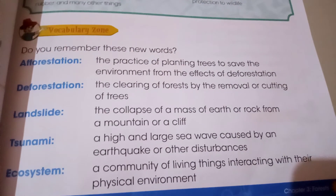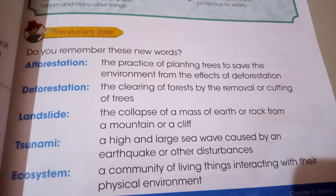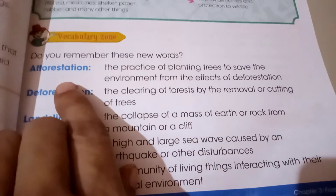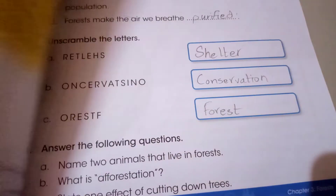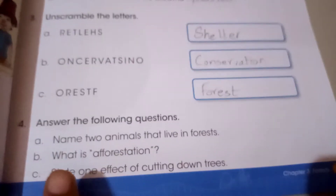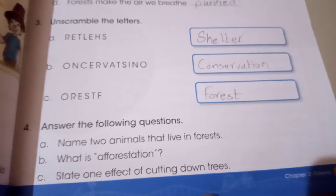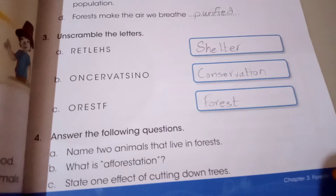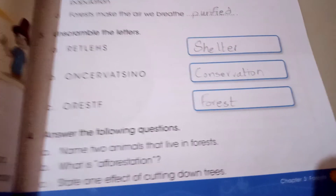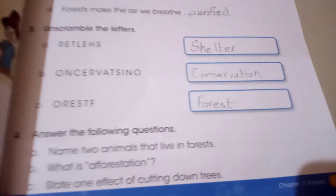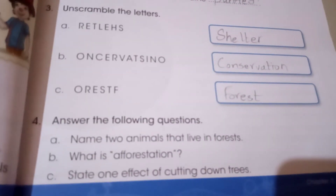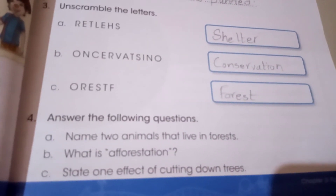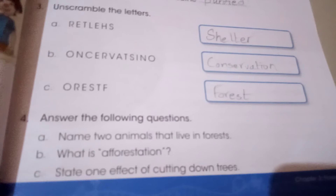You can write lion, tiger, wolf, or fox — any two. For what is afforestation, you can take the definition from page number 37. Then state one side effect of cutting down trees. The children have shared many things — what will happen if you cut down trees? The birds and animals will lose their homes.